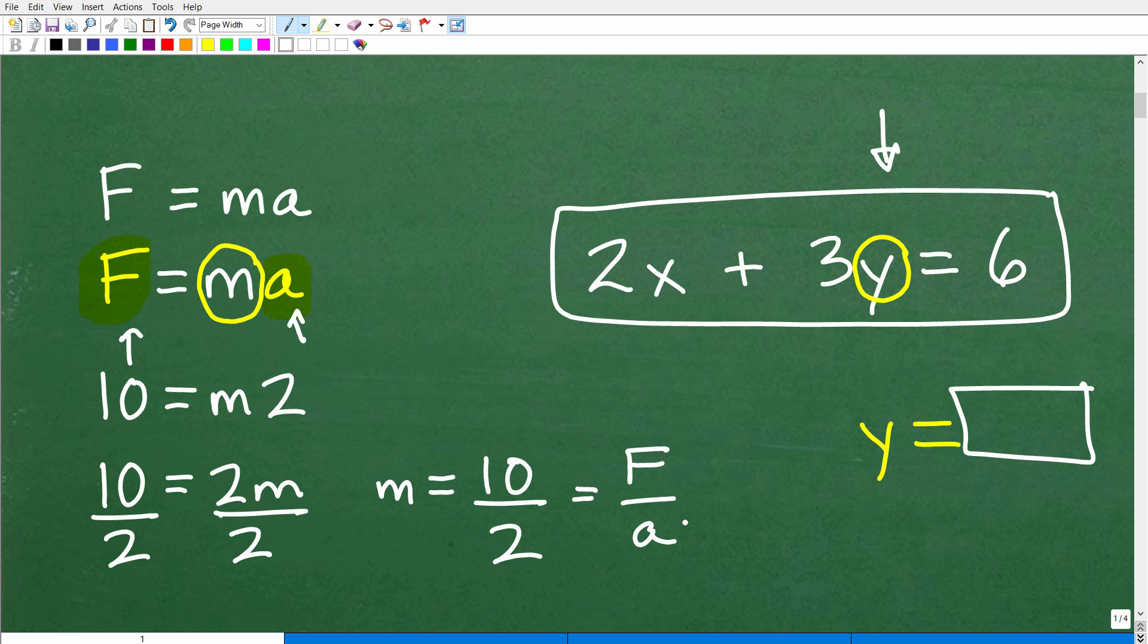So a lot of students struggle with solving for a particular variable, a specific variable when there's multiple variables in an equation or formula. You've got to get really good at this. And this is exactly what we have to do right here. We need to solve for y. So to do that, you're going to treat all these other things as numbers and only the y as a variable. So let's go ahead and do that now.